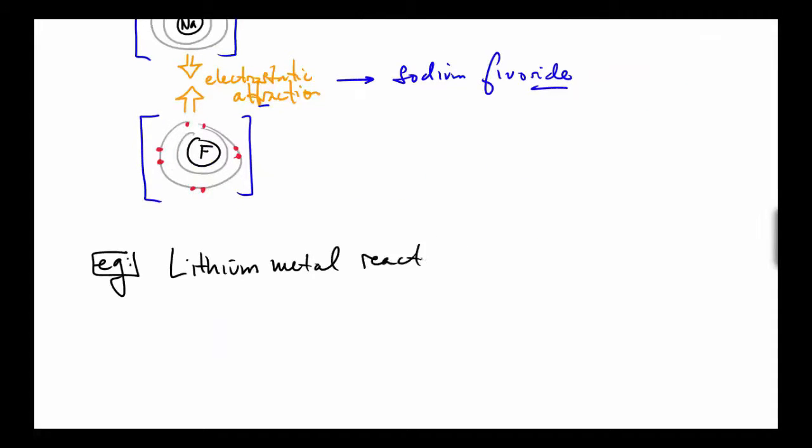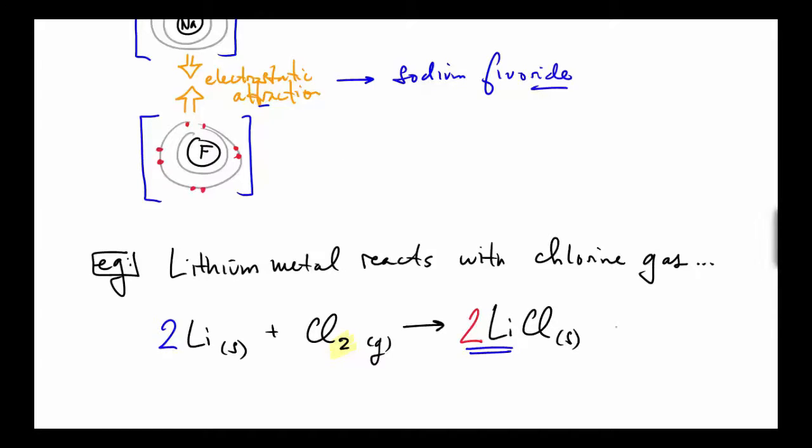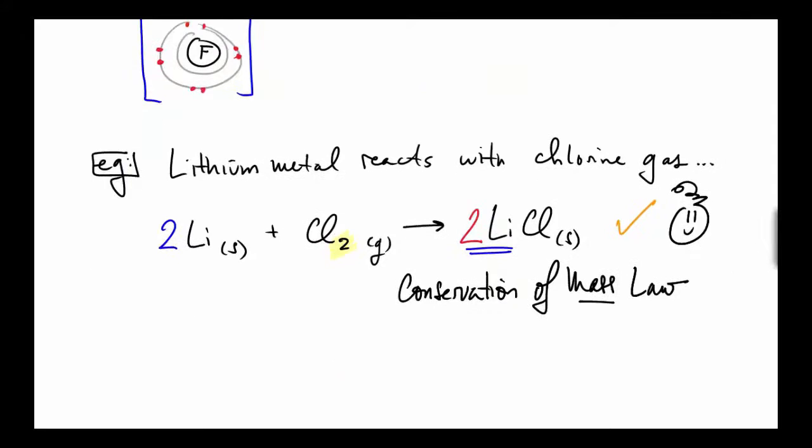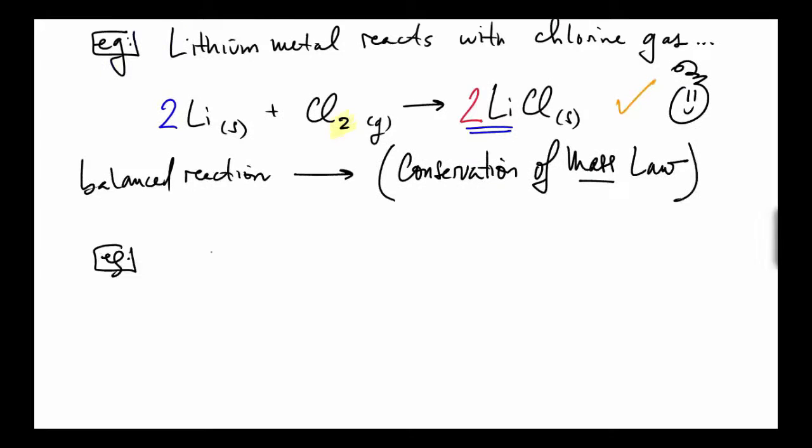For instance, let's see lithium metal react with chlorine gas. Solid lithium and chlorine gas react to form lithium chloride. Note there's two chlorines there, so we need to balance the equation this way. The conservation of mass law requires us to balance chemical equations like this, so it's all balanced and the conservation of mass law is satisfied.